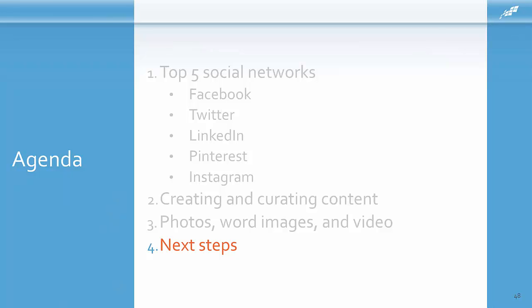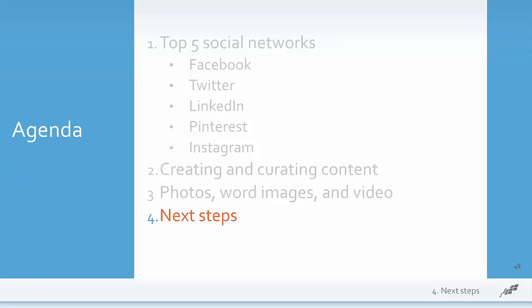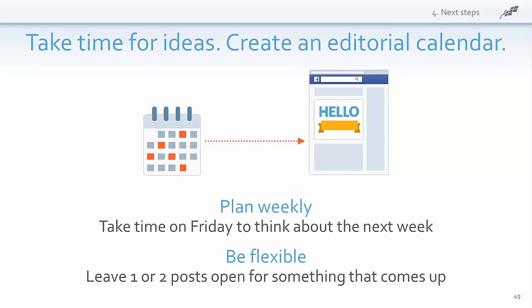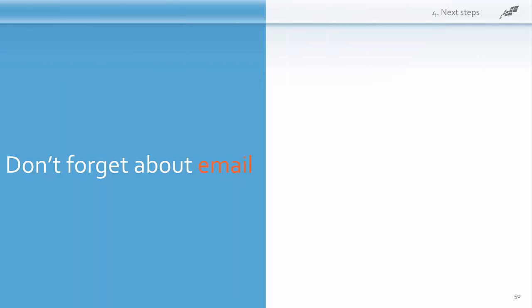We've covered a ton of information today. Something that can help a lot is an editorial calendar — this can be as simple as a blank calendar you print out or scheduling Facebook posts in your Outlook calendar. Having a calendar helps you figure out what to post, ensures your important messages are getting out there, and helps you be consistent. You don't need to plan far in advance — plan for the upcoming week and at the end of the week, start scheduling content ideas for the next week. Be flexible and save some spaces for something that comes up at the last minute or to share something interesting you find.